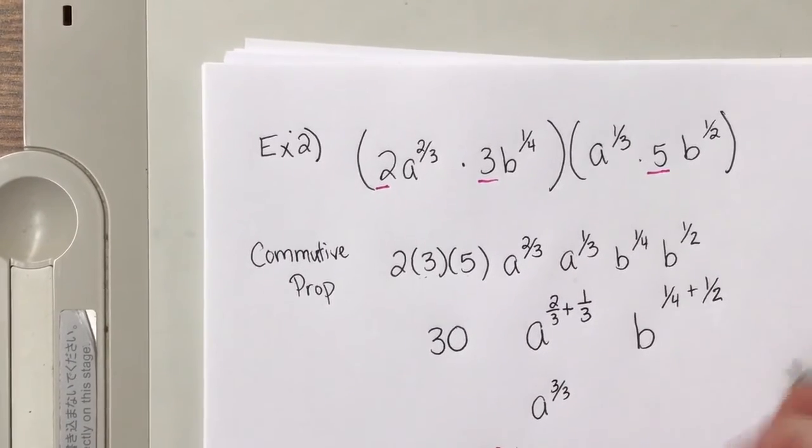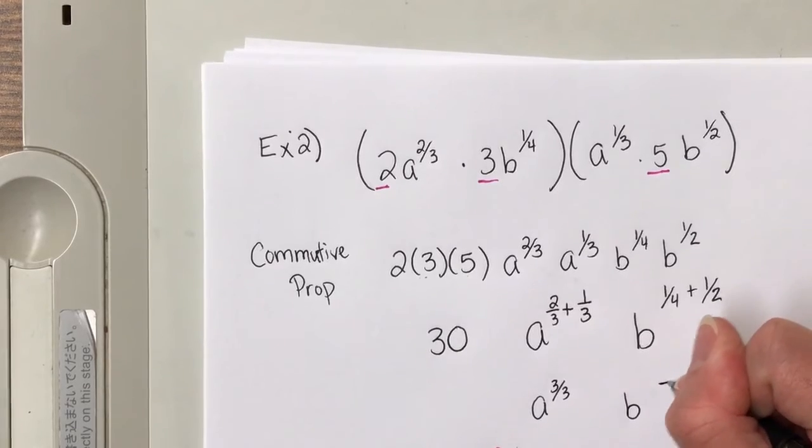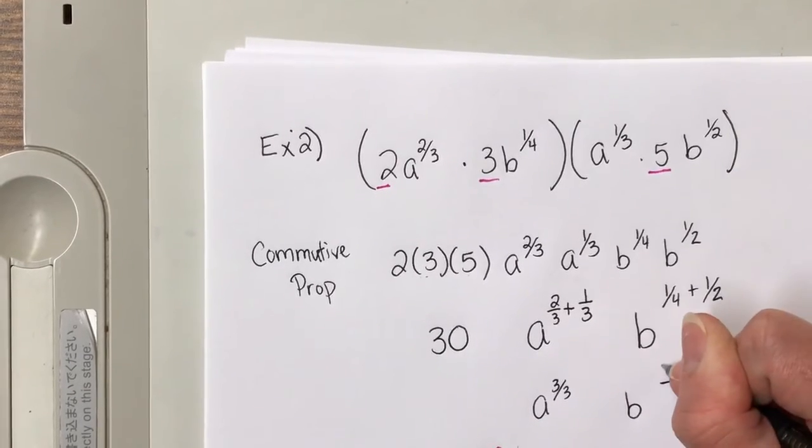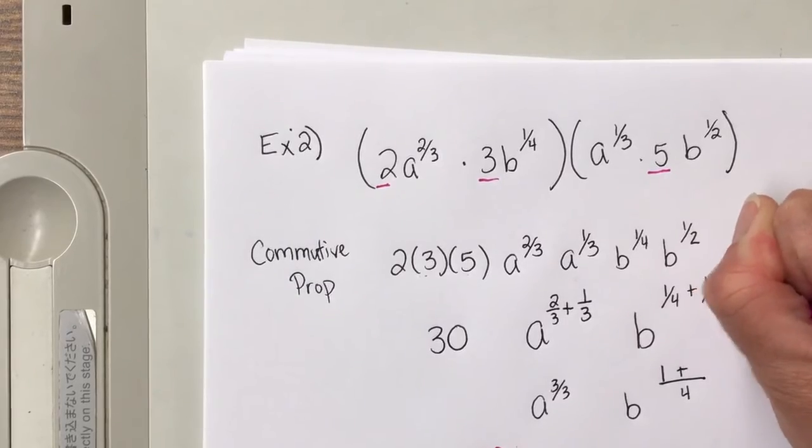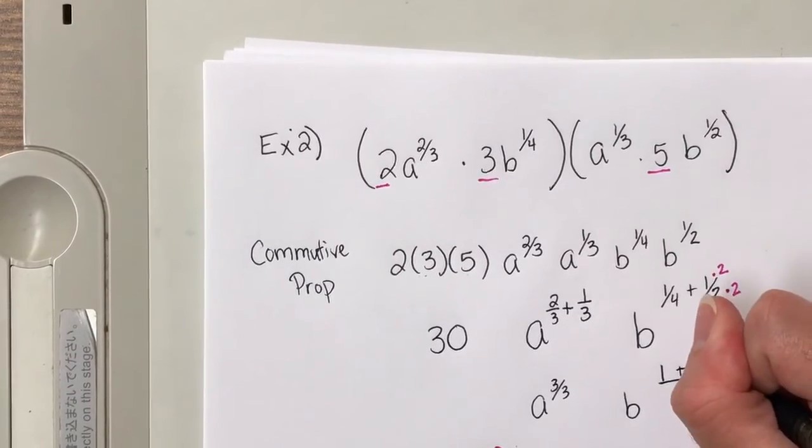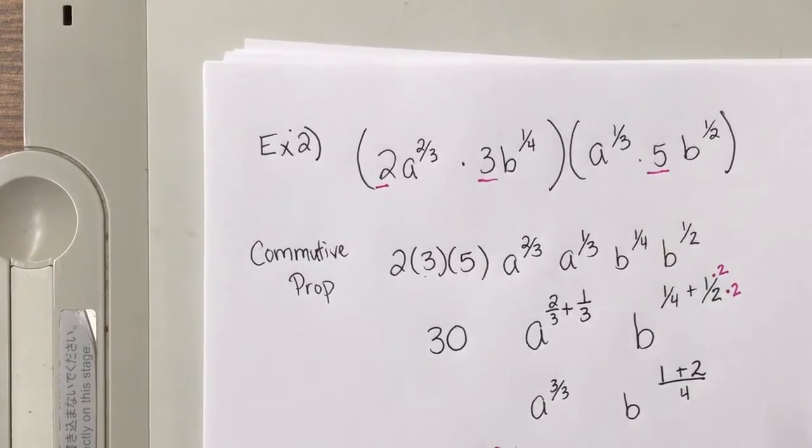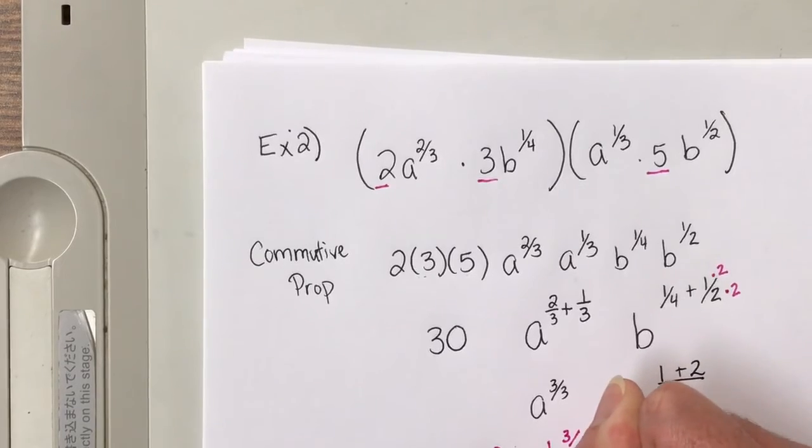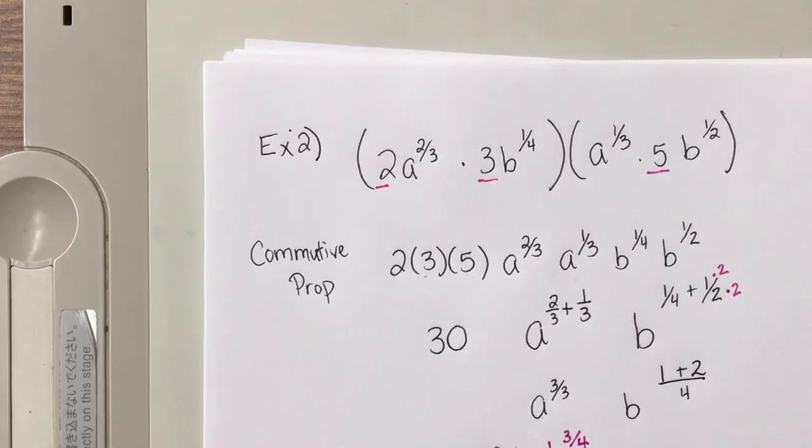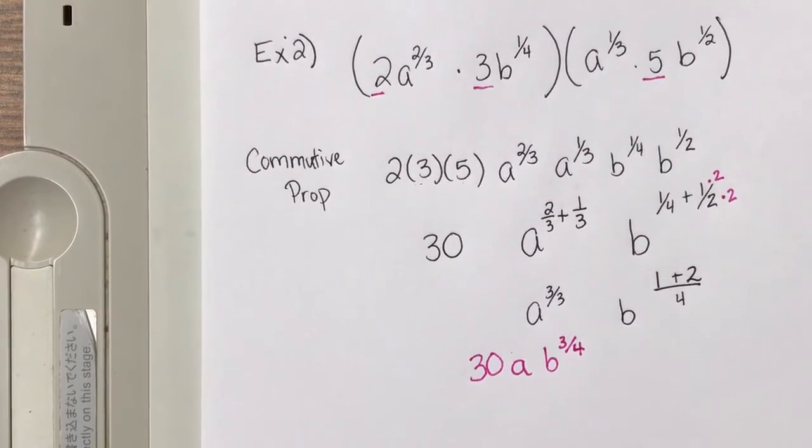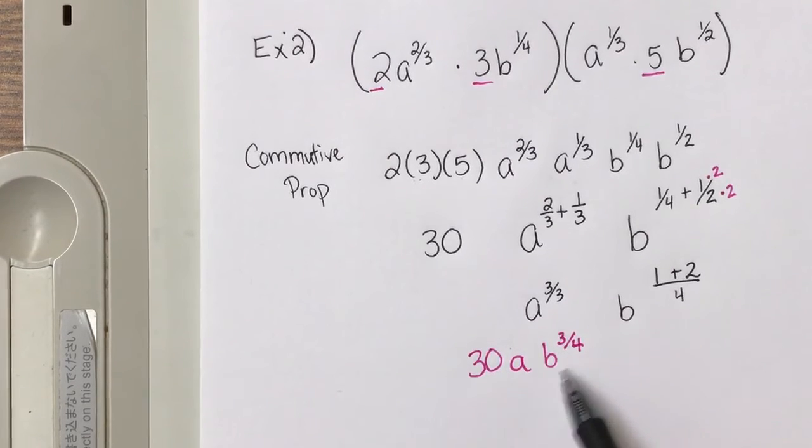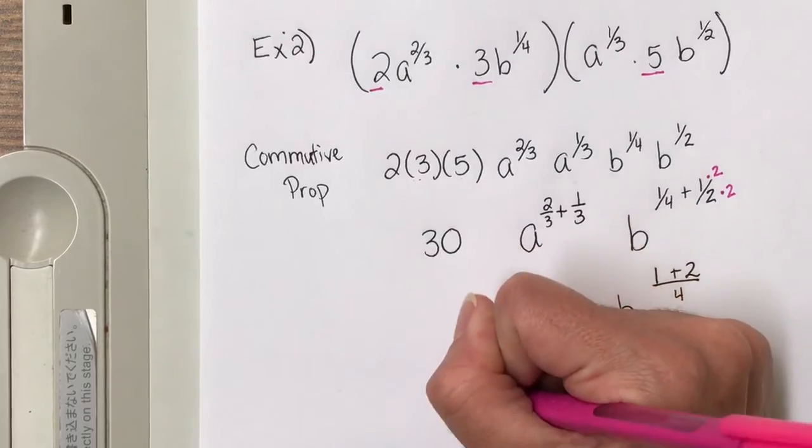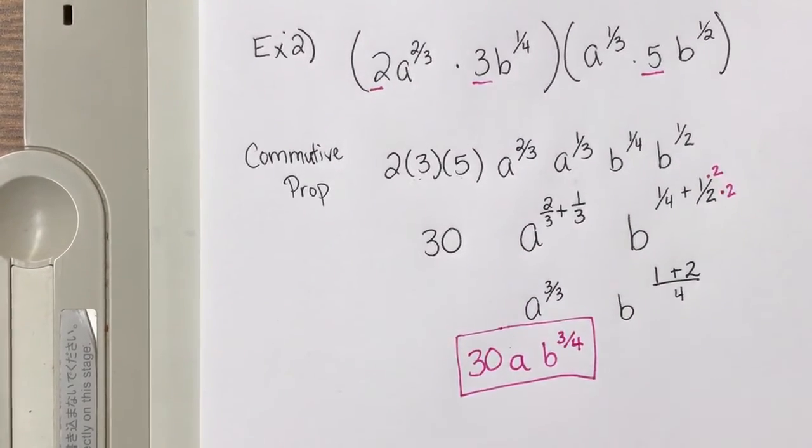So what about one-fourth plus one-half? Well, find a common denominator, which is going to be 4. So then I'm going to add the tops. To make it a 4, I had to times the top and the bottom by 2. So this becomes now 1 plus 2 over 4, or B to the three-fourths. So always ask yourself, is this simplified? So I can't do anything else with the 30. I can't do anything else with the A. With the B, I have one base, they're not negative. So the answer is we're simplified.